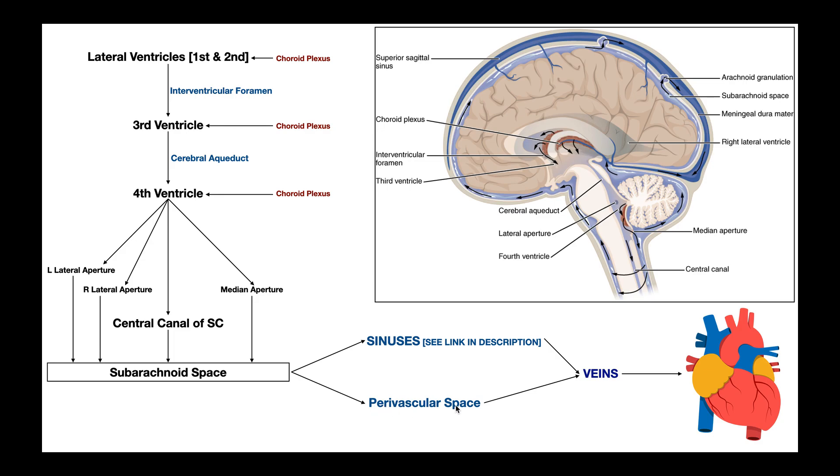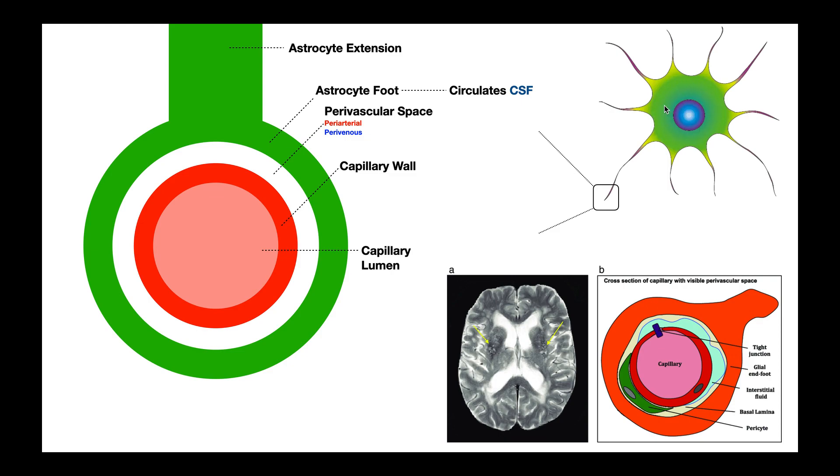So what is the paravascular space? Take a look at this glial cell right here, an astrocyte. An astrocyte is characterized by having these extensions all over its body. The terminal part of any extension terminates with an astrocyte foot. Here's the terminal part, and its foot actually wraps around small blood vessels like small veins, small arteries and capillaries. Here in red, you see the wall of a capillary. It could be a small artery or vein.